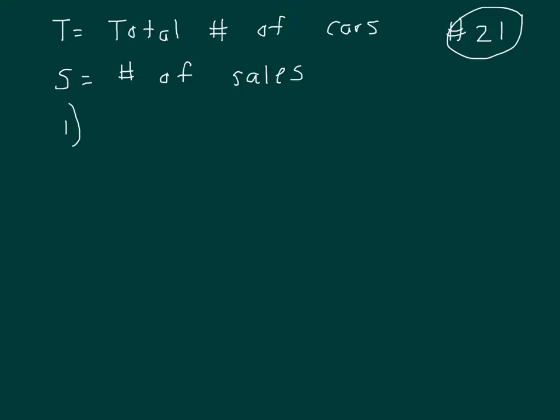Alright, let's look at clue 1. Remember, we're trying to find T. If each of the salespeople sells 4 cars, well how many cars would that be? You've got S salespeople, so 4S would be the number of cars the salespeople sold, and you've got 23 left.